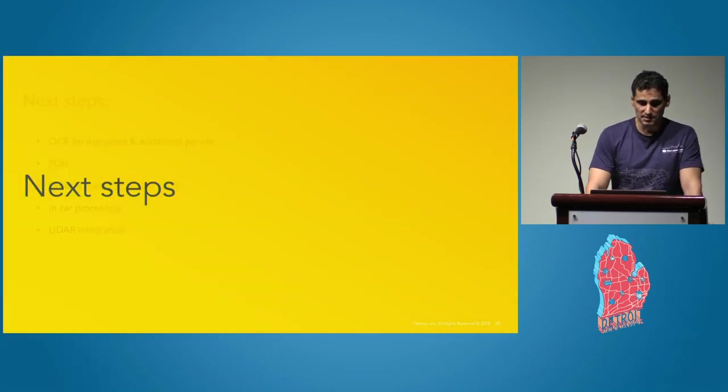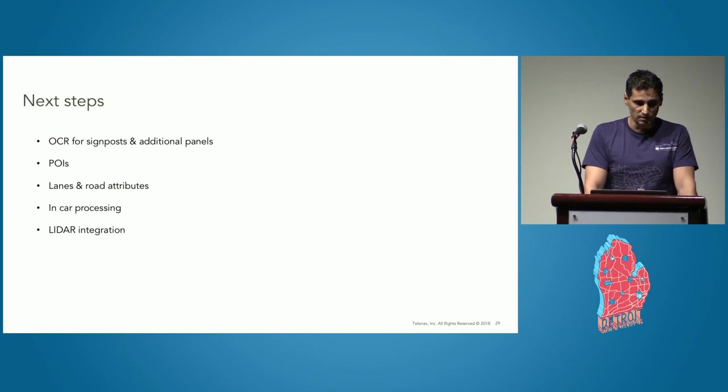Next steps for us are integrating optical character recognition systems for signposts and additional panels, detecting points of interest, detecting lanes and road attributes, doing in-car processing testing, making use of LiDAR data mainly for better positioning of the traffic signs. We already started with some of them and I will be happy to share with you the results on the next conference.